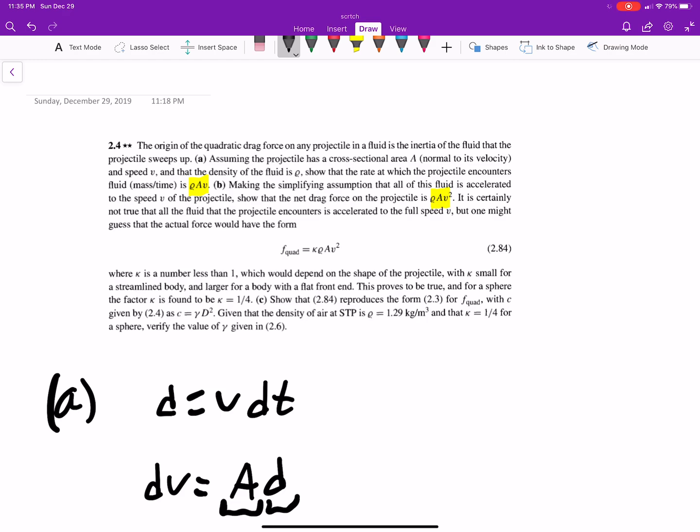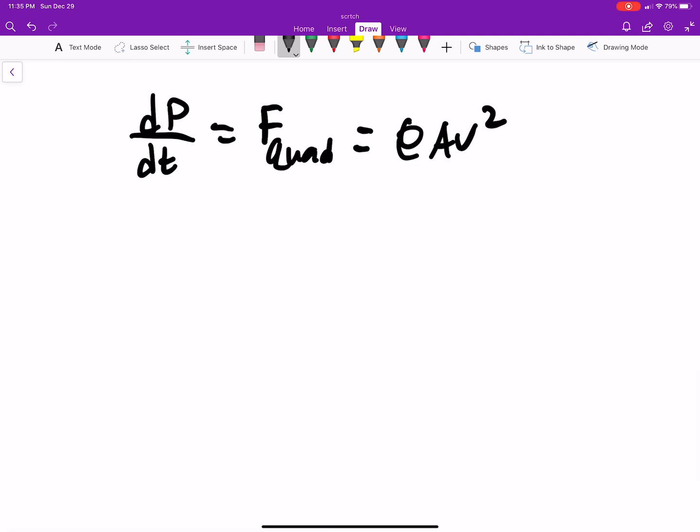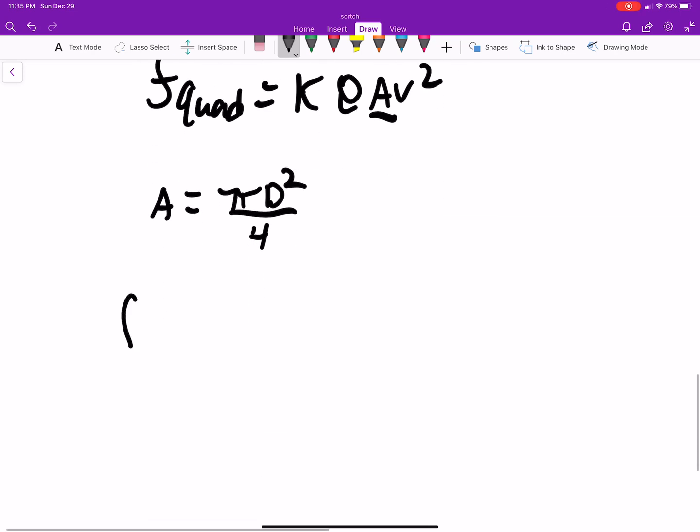In this case, it's the quadratic air resistance. It's just that, which is what they had for B, right here. Now, for part C, it says show that what we have in 2.84 reduces to 2.3. And 2.3 is that F_quad is equal to C V squared. Okay, so they gave us this bit in the question. They gave us that bit. And what do we know? Well, we know the area is going to be π times D squared over 4.